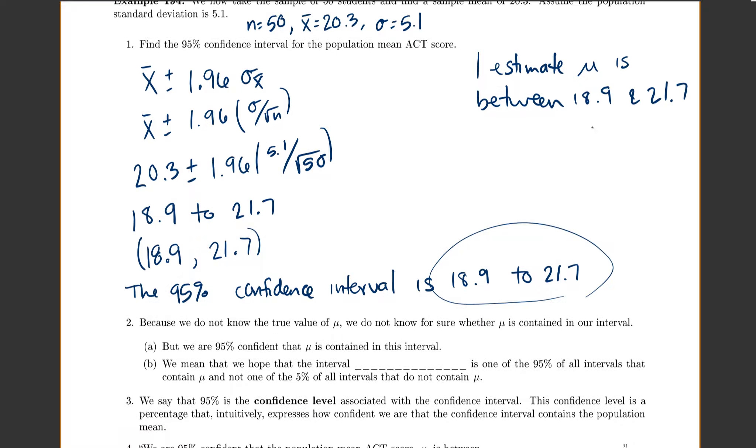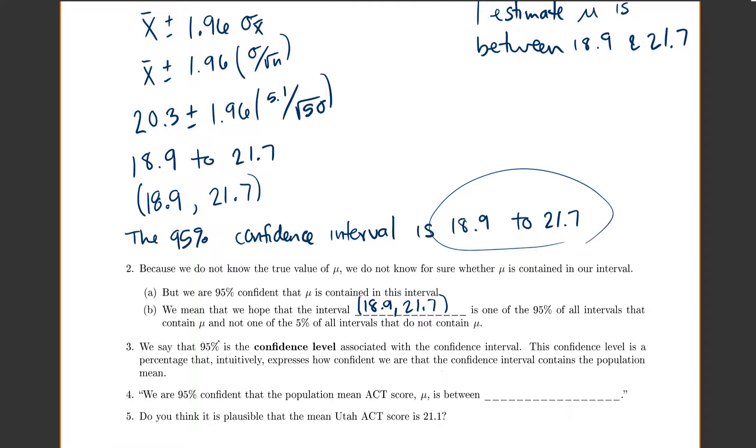Now, the problem, though, is that because we don't actually know the true value mu, we don't know for sure whether mu is contained in our interval. But we are 95% confident this day. What we mean by this is we hope that our interval that we picked out of 18.9 to 21.7, we hope that that interval is one of the 95% of all the intervals that contained mu and not one of the 5% of all the intervals that do not contain mu. And we'll say that 95% is our confidence level. It's a percentage that kind of tells us how confident we are that our confidence interval actually contains the population mean.